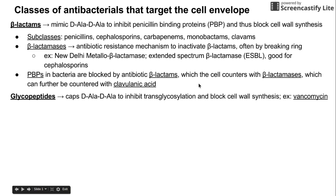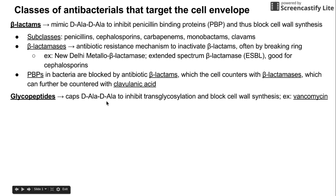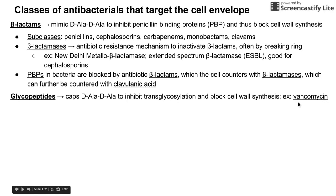Another class of antibacterials are the glycopeptides. This is a molecule that sits on top of the D-ala-D-ala peptide chain and inhibits transglycosylation of the peptidoglycan cell wall, which blocks cell wall synthesis. A very common example of glycopeptides is vancomycin, used in the clinic pretty frequently, with not too many resistant strains against it.